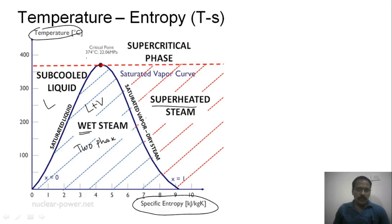At the topmost point of this dome, this point is known as the critical point. The line from the critical point to the left-hand side is the saturated liquid line, and on the right-hand side this is the saturated vapor line.